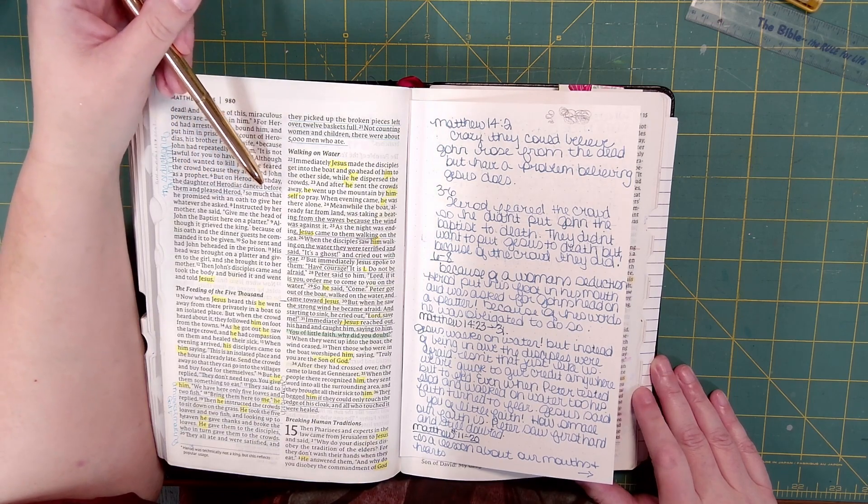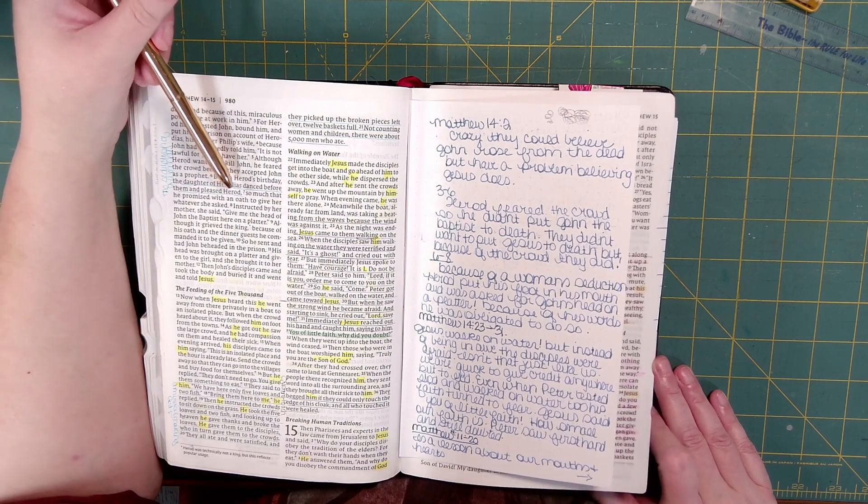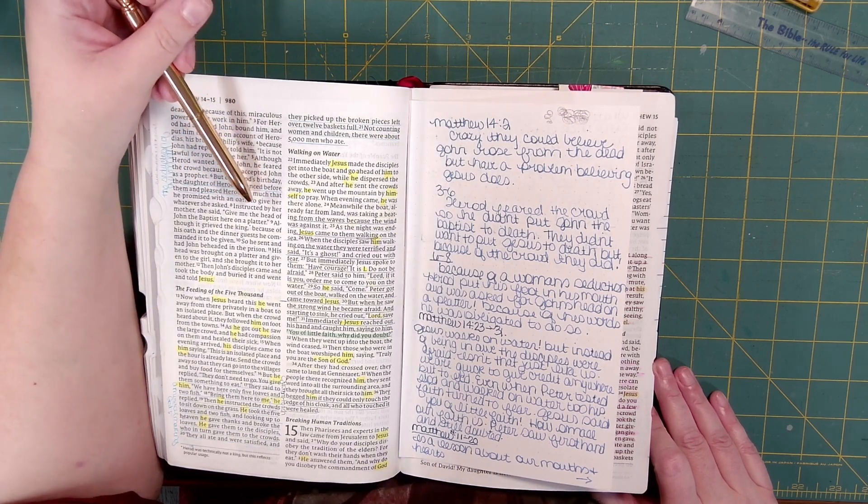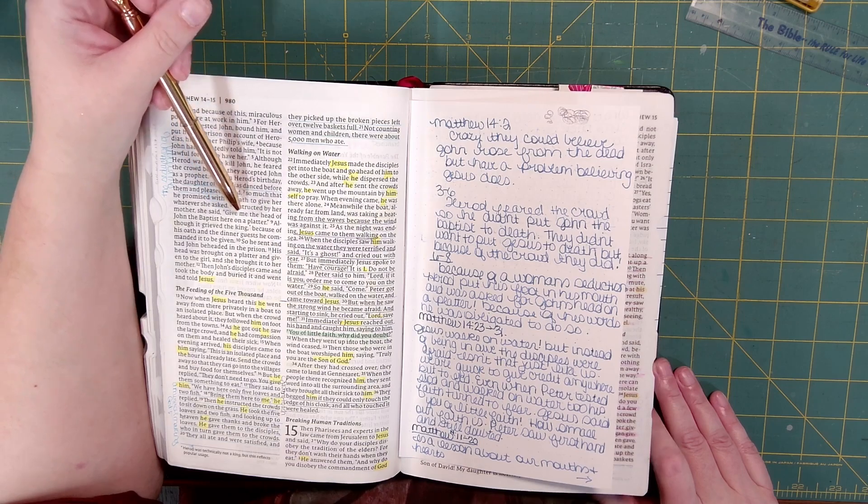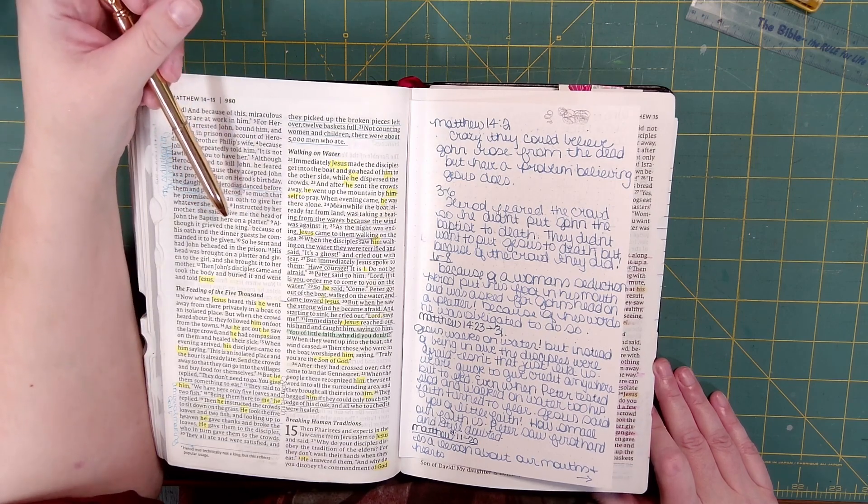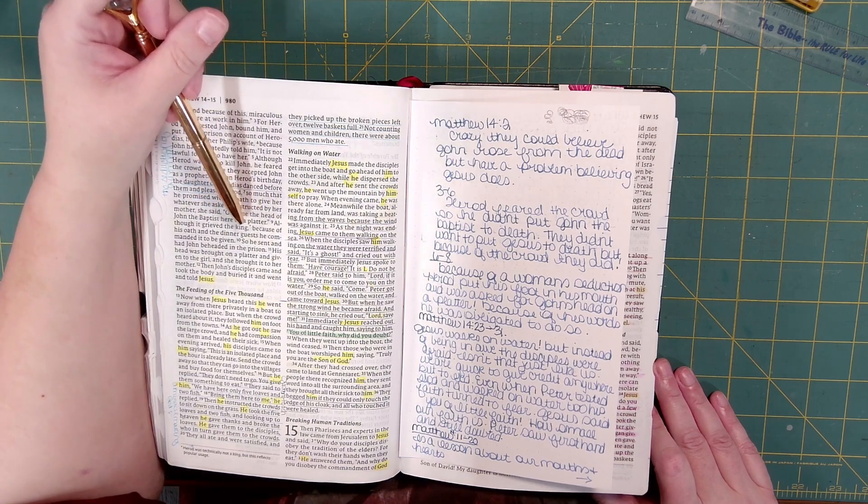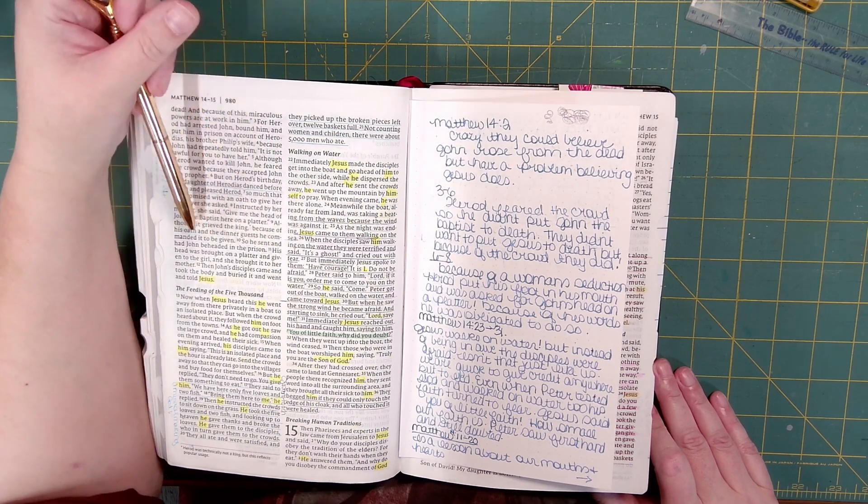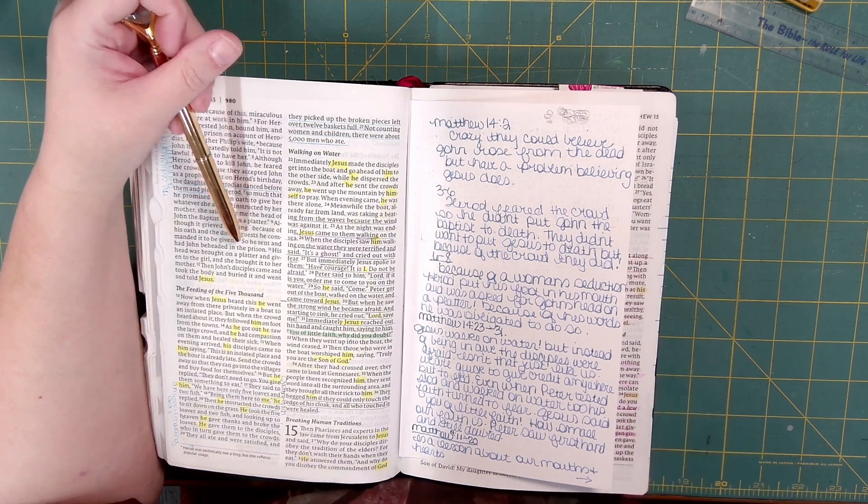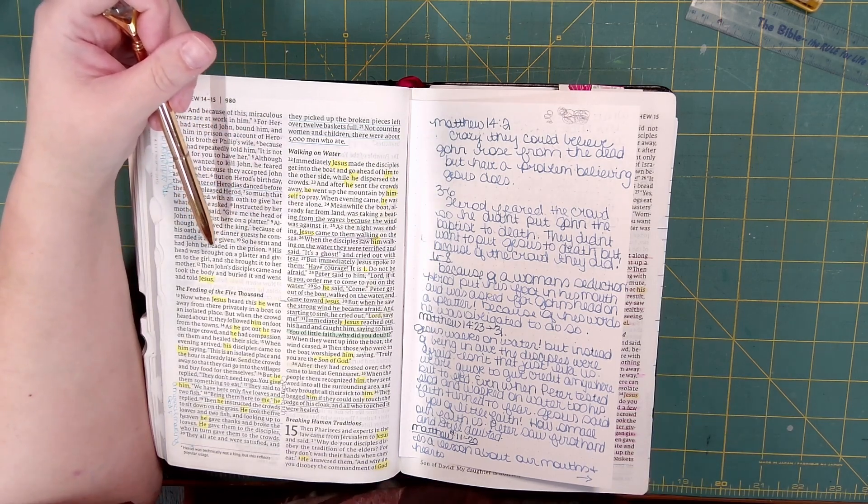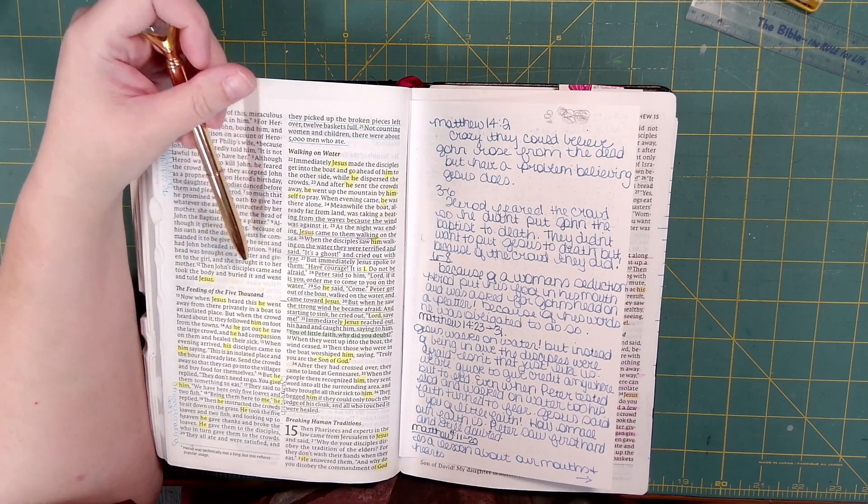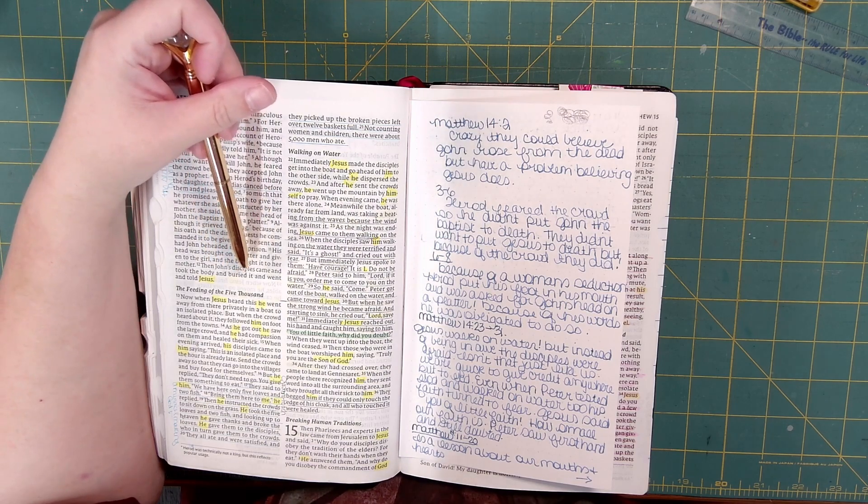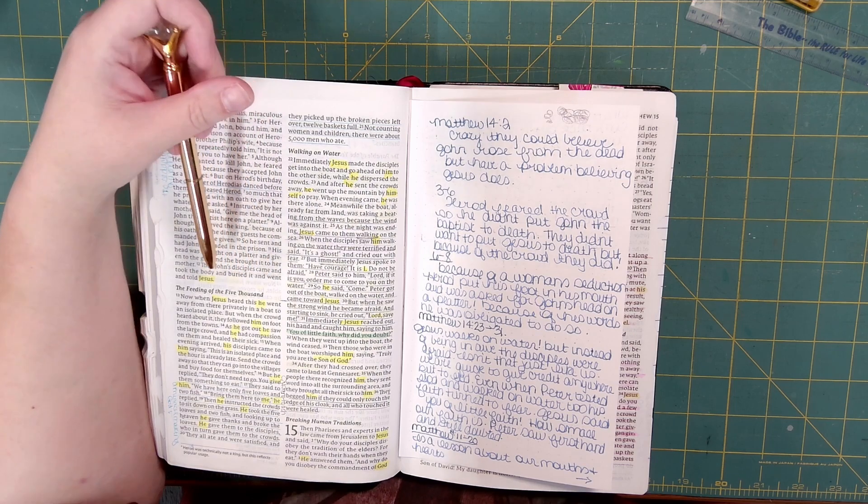But on Herod's birthday, the daughter of Herodias danced before them and pleased Herod, so much that he promised with an oath to give her whatever she asked. Instructed by her mother, she said, Give me the head of John the Baptist here on a platter. Although it grieved the king, because of his oath and the dinner guests, he commanded it to be given. So he sent and had John beheaded in the prison. His head was brought on a platter and given to the girl, and she brought it to her mother. Then John's disciples came and took the body and buried it and went and told Jesus.